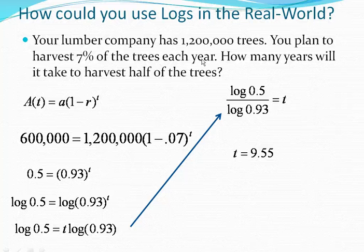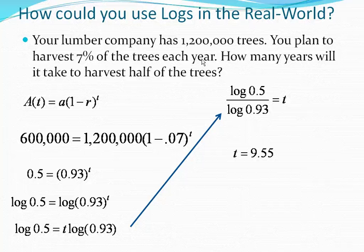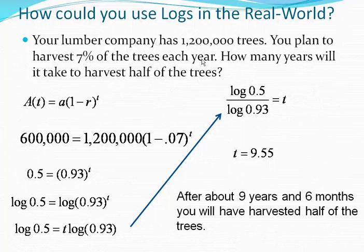So let me ask you this: how many years is 0.55? Think about that when you have to construct an answer, too, because it's helpful if you talk in years and months. So what would you say on that one? Oh, half a year about, so let's say six months. Half a year. Okay, so after about nine years and six months, you have harvested half of the trees. So that's the time you're solving for, that t.